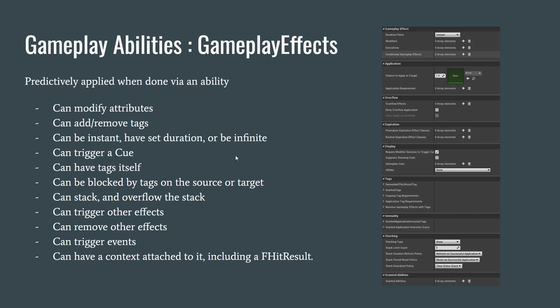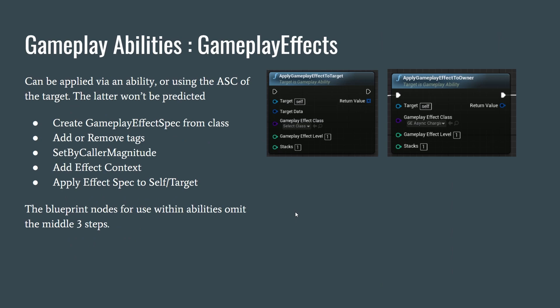Gameplay Effects are one of the biggest workhorses in the Gameplay Ability System. They can modify attributes, add or remove tags, and can be instant, have a duration, or be infinite. We'll get more in depth on these three duration policies. A Gameplay Effect can trigger a Gameplay Cue, it can have tags on itself, and it can be blocked by tags. This is basically how you apply slows, damage, damage over time, poison, and so on.